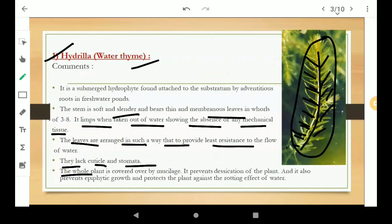The whole plant is covered by mucilage, a gum-like substance. It prevents desiccation of the plant - desiccation means drying out of living organisms. It also prevents epiphytic growth, meaning growth on the surface of the plant.